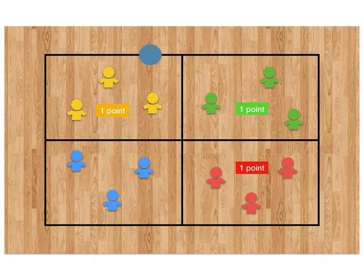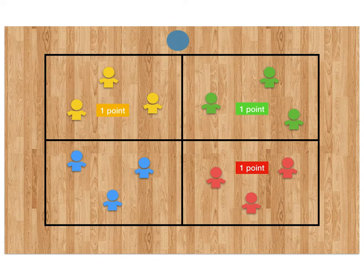Now this is also the same if, for example, the blue team hit the ball outside the areas. Yellows, greens and reds would all score a point.